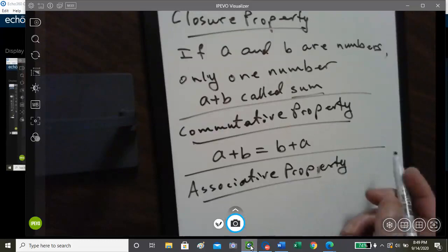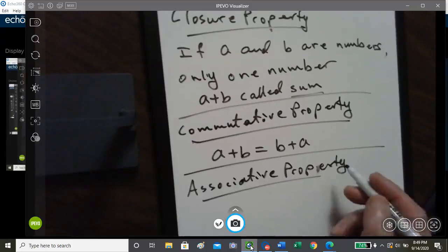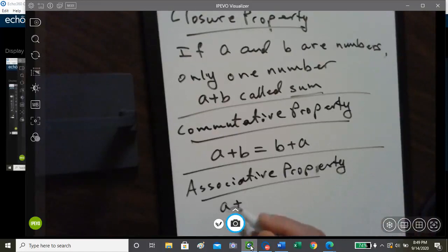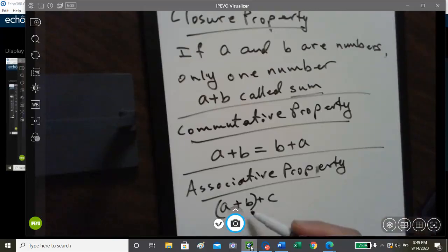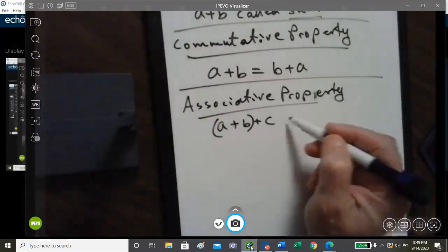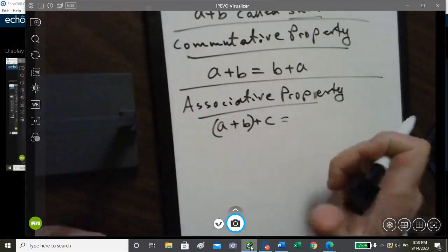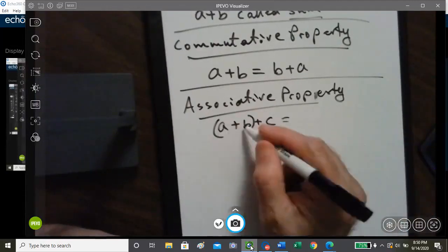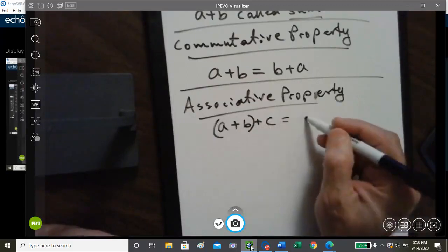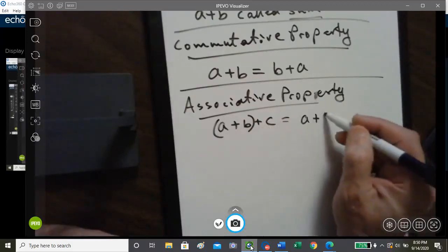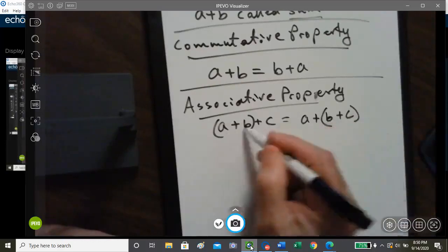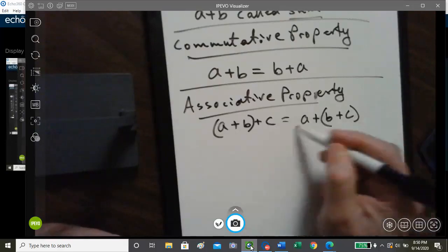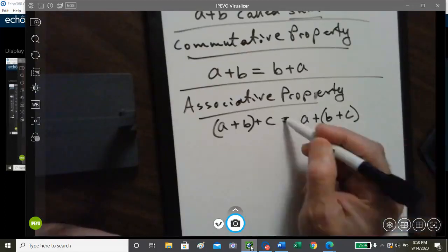The associative property, that's where we have A plus B plus C, where we have parentheses around the first two numbers. And so now, we would add A and B first, and then add C. Well, you can switch the parentheses from between the first two to the last two, and the sum is still going to be the same.